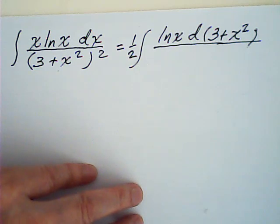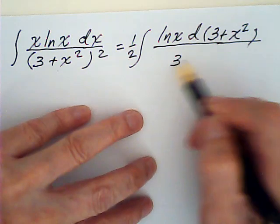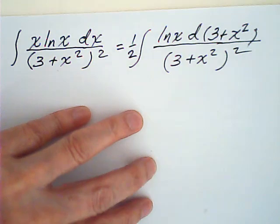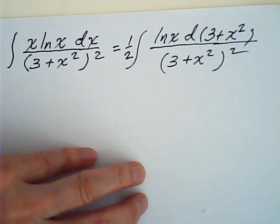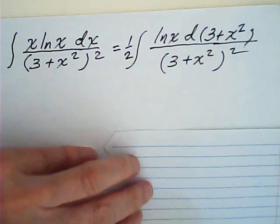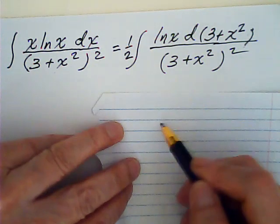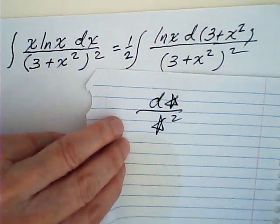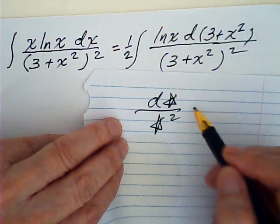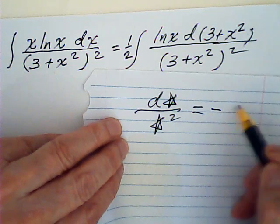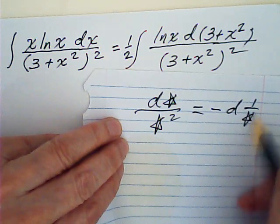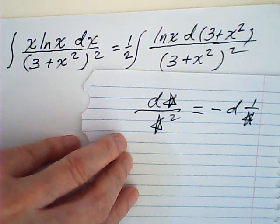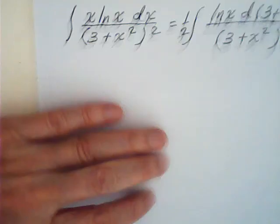So this is 3 plus x squared squared. Now then I know that this could be written as negative d of 1 over a star. They are the same.